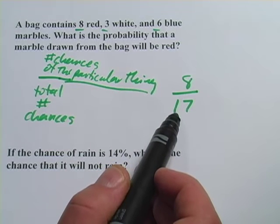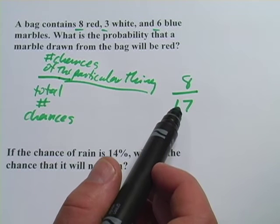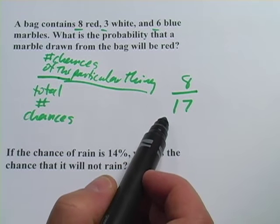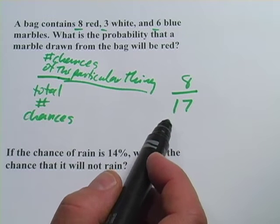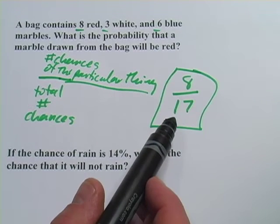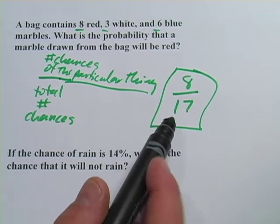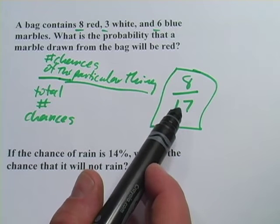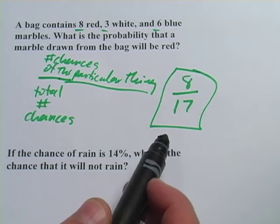When you get to this point, you want to make sure you reduce this fraction if you can. Looks like there's no common factors here. Seventeen's a prime number, so we can just leave it like it is. If you want to convert that to a percent probability, just convert this to a decimal by doing the division on your calculator and then move the decimal place over two, and you'll have a percent.